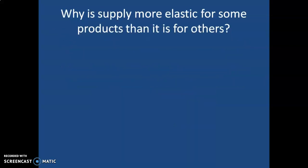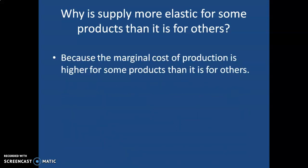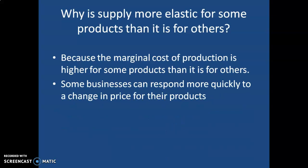Why is supply more elastic for some products than others? First, the marginal cost of production is higher for some products. If production costs increase a lot as you increase production, you'll have a more elastic supply curve. Second, some businesses can respond more quickly to a price change for their products. If you can respond quickly, your supply is more elastic; if you cannot respond quickly, your supply curve is inelastic.